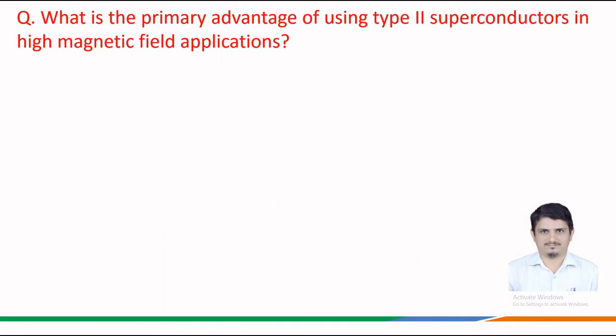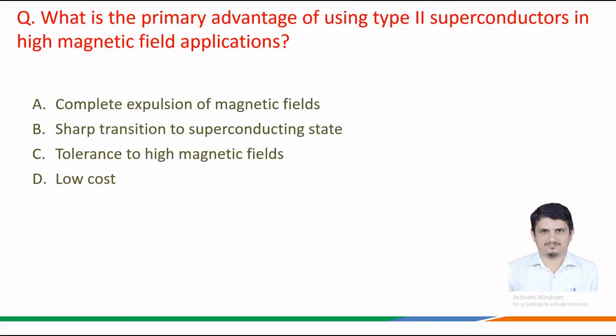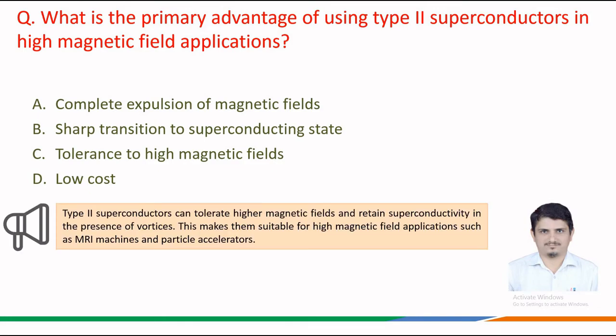Next question: what is the primary advantage of using type 2 superconductors in high magnetic field applications? The given options are: option a, complete expulsion of magnetic fields; option b, sharp transition to the superconducting state; option c, tolerance to high magnetic fields; and option d, low cost.